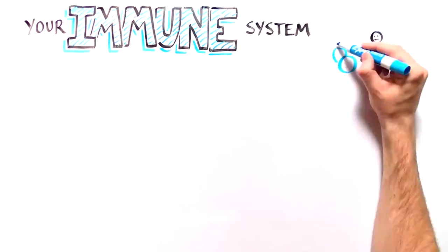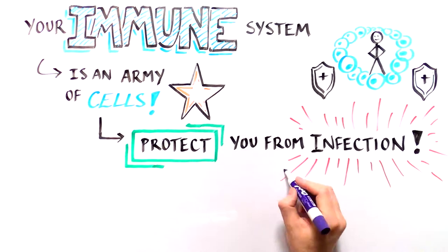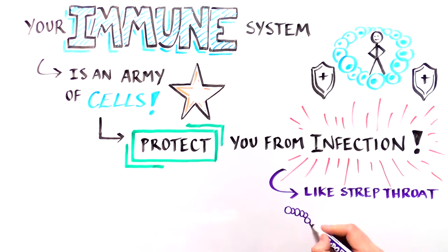Your immune system is made up of an army of cells that protect you from infections, like the virus that causes the common cold, or the bacteria that cause strep throat.